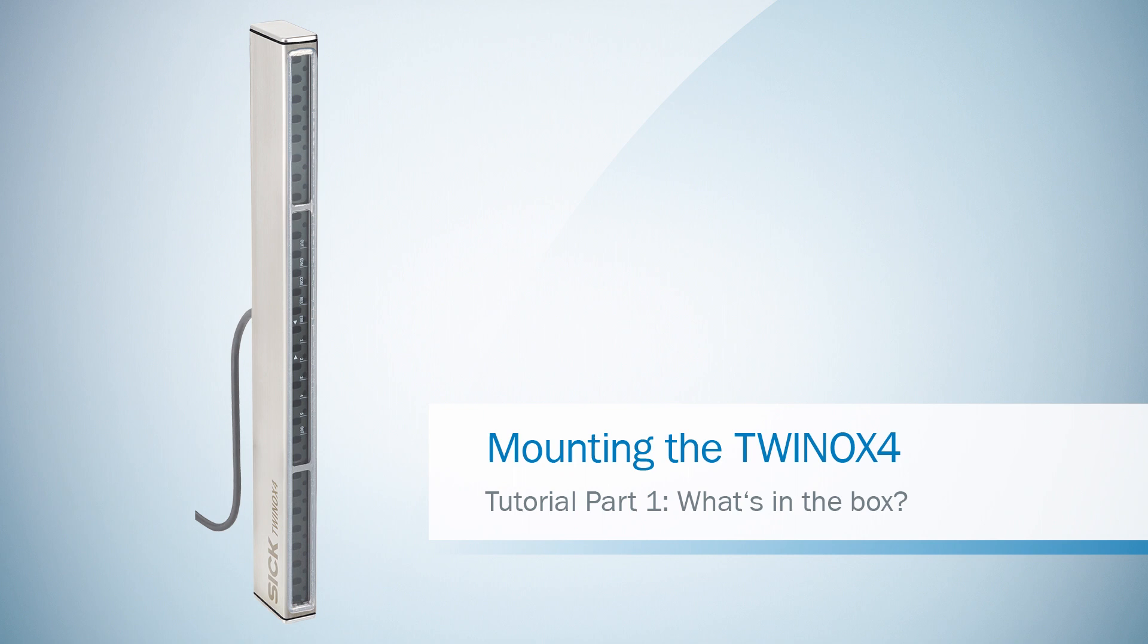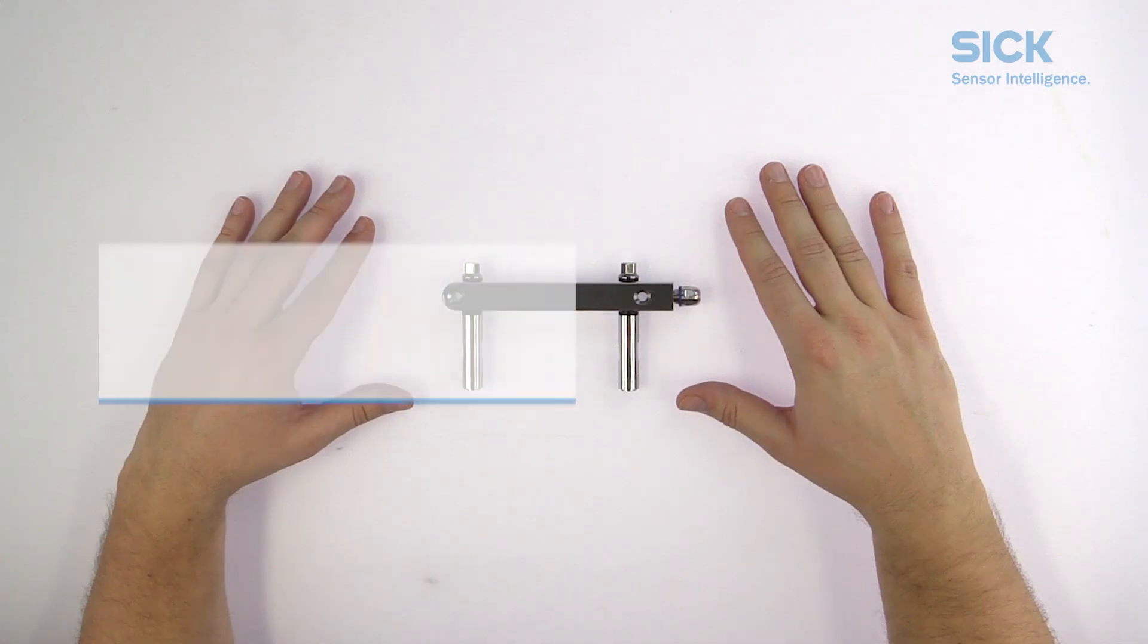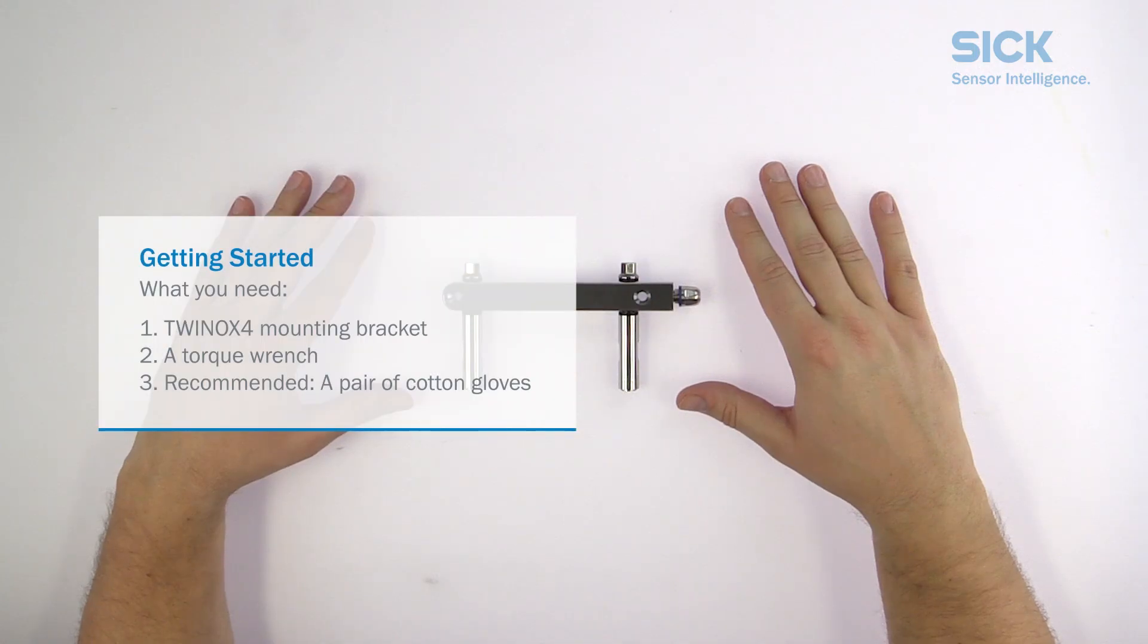We are going to show you in this video how to assemble the mounting bracket for the Twinox 4 and how to mount it to the Twinox 4 safety light curtain. Keep in mind you only have to do this if you want to use our mounting holder. Otherwise you can mount the Twinox 4 directly to the machine.